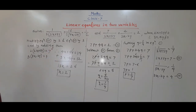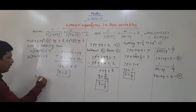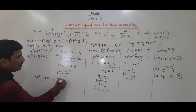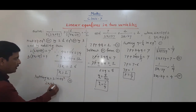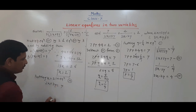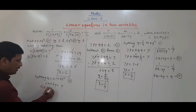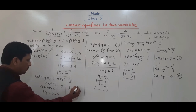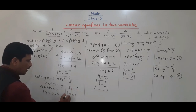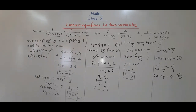Now putting x = 2 in equation 3, which is 2x + 3y = 7: 2 into 2 plus 3y = 7, so 4 + 3y = 7, giving 3y = 3, therefore y = 1. So x = 2 and y = 1. We have both values.